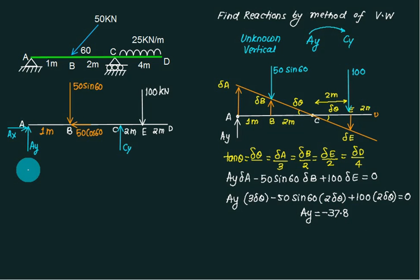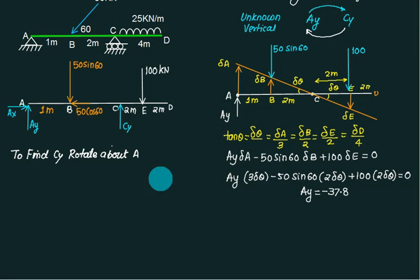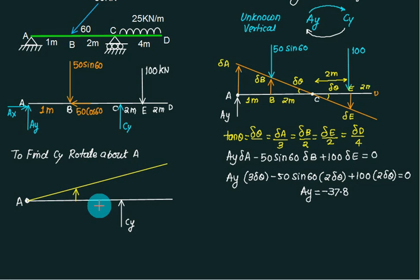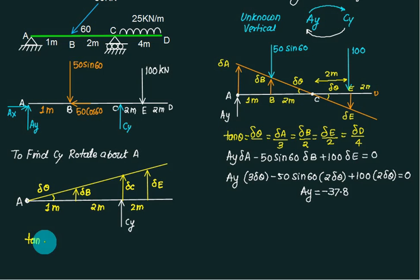Now what we wish to find out is C_Y. To find C_Y, we rotate about a different point. This time we will not show the displacement at D — why not? Because there is no force there. Show delta B, delta C, and delta E. Tan theta is the same as delta, so next time we will directly write delta instead of tan.